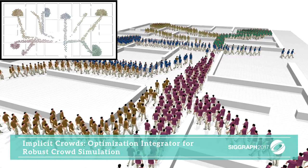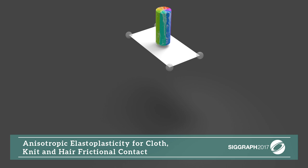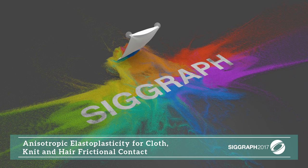A new crowd simulation approach provides collision-free motion with high-quality collective behavior even around these dense bottlenecks. Finally, a new method can handle frictional contact even as 7 million grains of sand flow over this sheet of cloth.